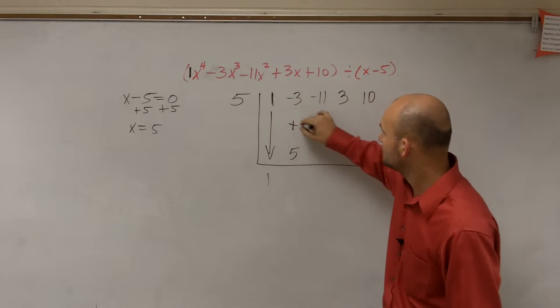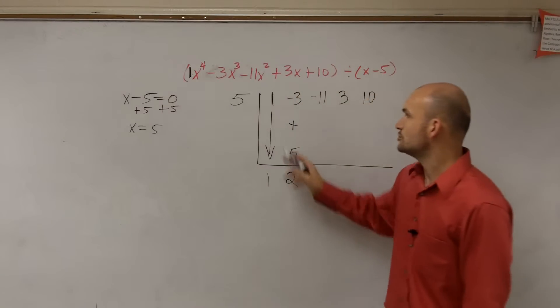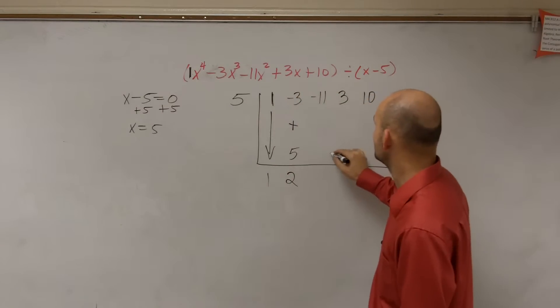Then you add vertically. Negative 3 plus 5 is positive 2. 2 times 5 is 10.